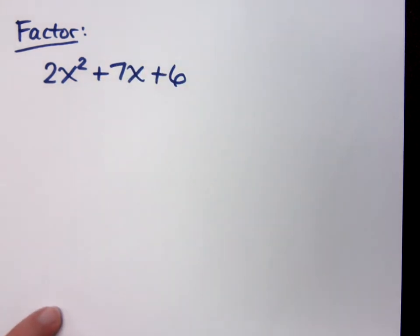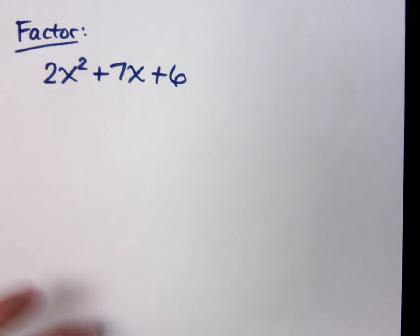Let's look at 2x squared plus 7x plus 6. Oh no! The lead coefficient's not 1. What am I gonna do here?